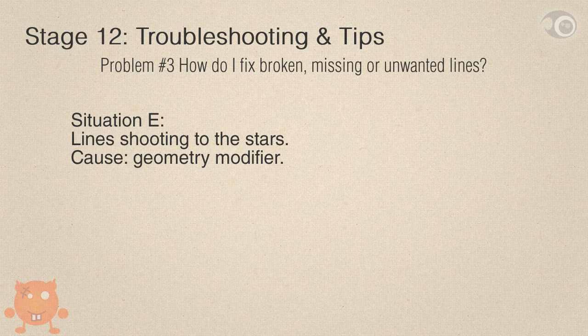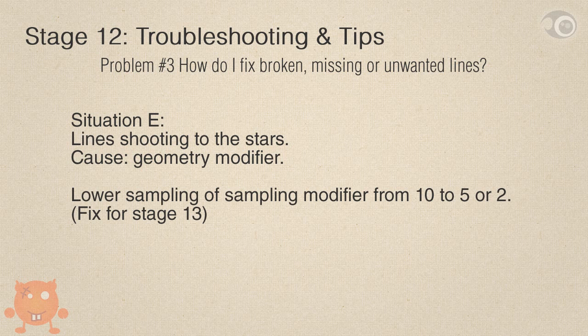Situation E: your lines stray away from the object and shoot to the stars — to infinity and beyond. This can be scary. Often it's one frame of animation that won't render right, and it can be caused by many factors, for example adding a geometry modifier. But there is one general solution: lower the sample of the sampling modifier from 10 to 5 or 2. Often that will fix the problem. Keep this in mind as you'll be using this fix for stage 13.